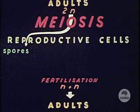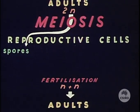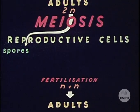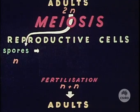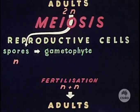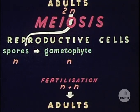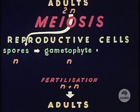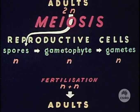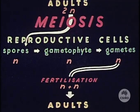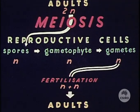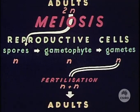Spores are formed instead of gametes. These spores with n chromosomes develop to an intermediate generation called the gametophyte, which then produces the gametes by ordinary mitosis. Two gametes fuse at fertilization and so the cycle continues.